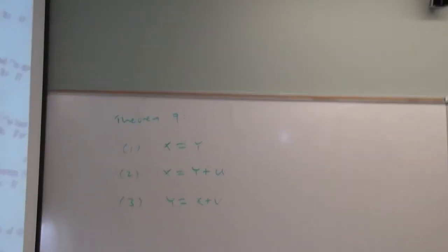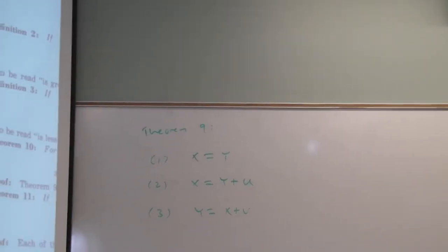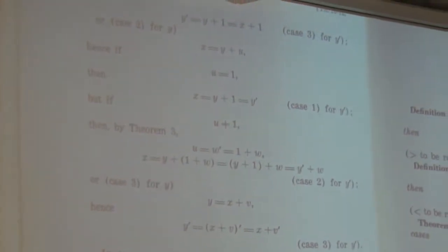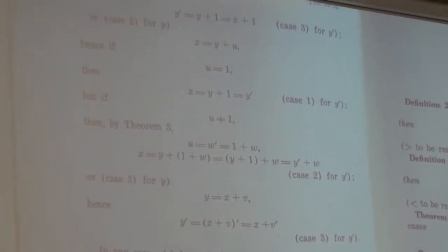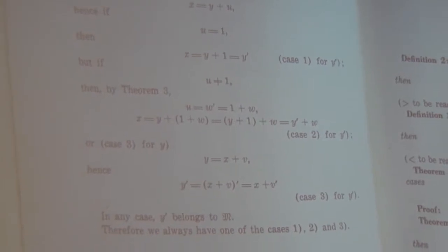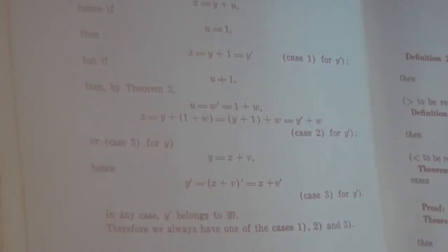This proof really consists of two different things you need to do. First, you need to verify that only one of those three things can happen simultaneously, and we've already verified that. Now we also need to verify that one of them has to happen. We know that if one of them has happened, then the other two can't happen. But now we have to verify that one of them has to happen.